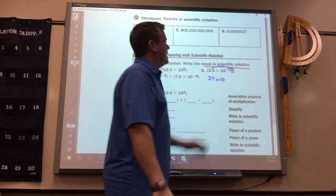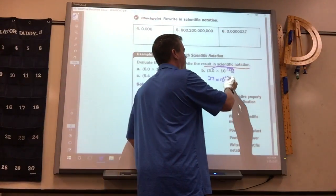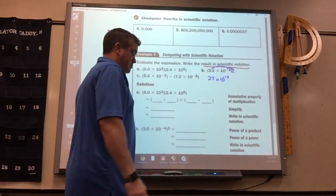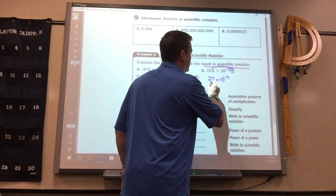And then, 10 to the negative 4th cubed is? Negative 12. So, this goes here.